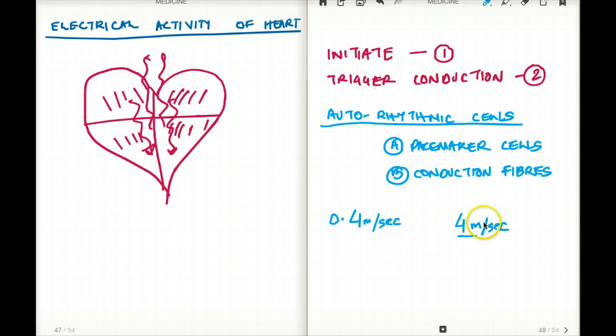So what happens is, let's say this is the SA node and we know that the SA node is at the upper corner of the right atrium near the junction of the superior vena cava. Okay, that's where the SA node is. Now the SA node, one of the pacemaker cells, is going to generate that action potential. As a result, that action potential is going to start depolarizing all these cells.